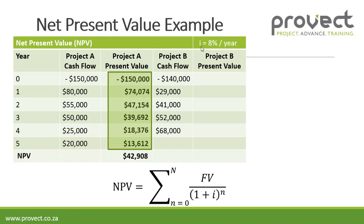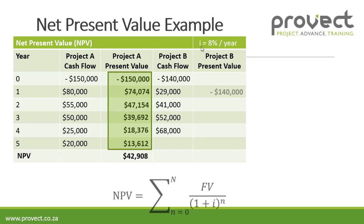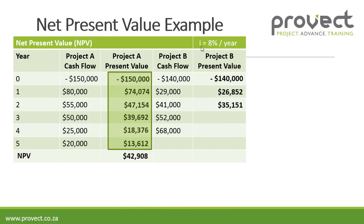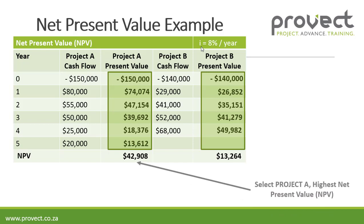Our net present value, which is the sum of all our present values, equals $42,908. We can do the same for project B, using the formula to calculate the present values of the cash flow for each year. The net present value for project B is $13,264. We will select project A, which has the highest net present value.